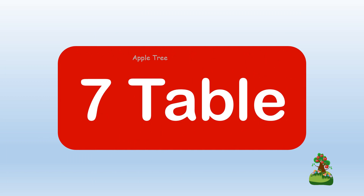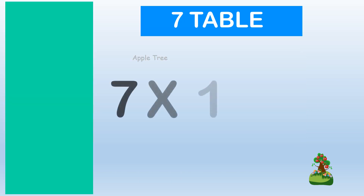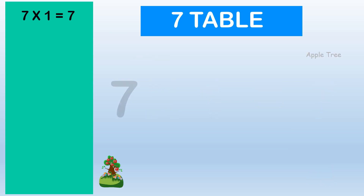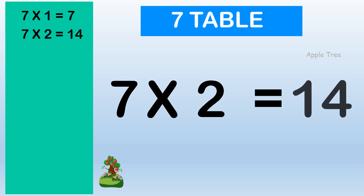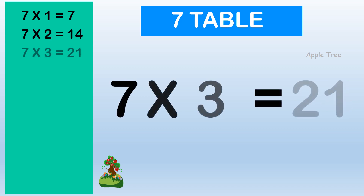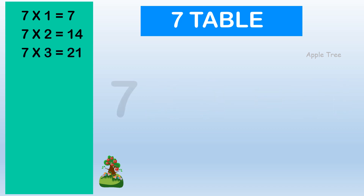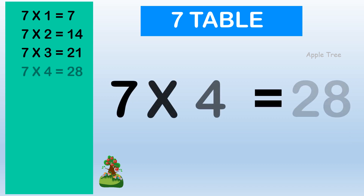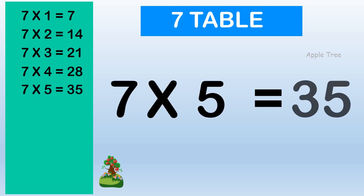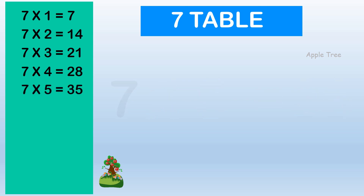Table for 7. 7 × 1 = 7, 7 × 2 = 14, 7 × 3 = 21, 7 × 4 = 28, 7 × 5 = 35.